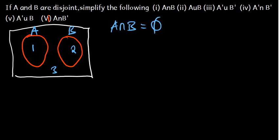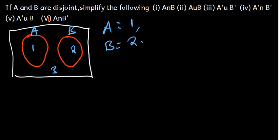Part 2 is A union B. Let's list the sets: A is equal to {1} and B is equal to {2}. So A union B is going to be {1, 2}, which is the same as A union B. The answer is just A union B.